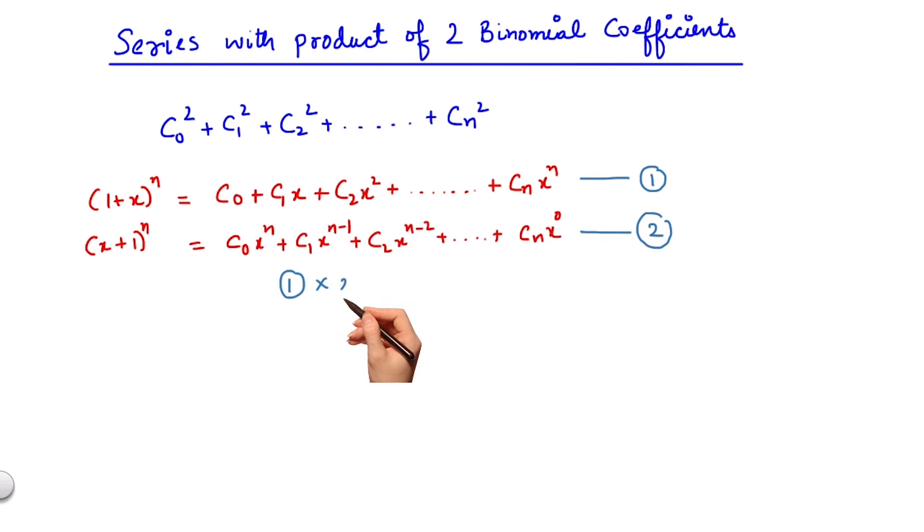Now if I were to multiply equation 1 by equation 2, my left hand side would become 1 plus x to the power 2n, while my right hand side would have many terms.